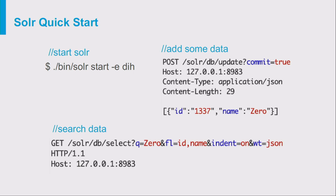Solr automatically indexes all of these documents and provides a very neat API that you can search over all this data. As you can see, there are no cookies, no authentication, and no special headers at all — which makes the Apache Solr engine a perfect victim for SSRF, CSRF, or request smuggling attacks.